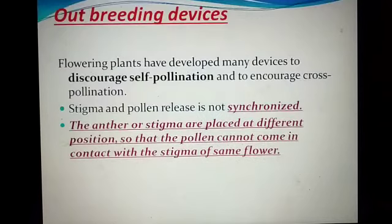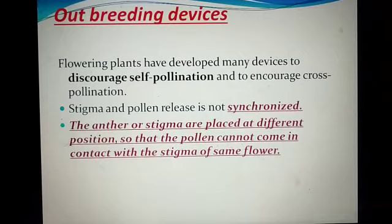So what happened? Flowering plants have developed many devices to discourage self-pollination and to encourage cross-pollination. These devices are called outbreeding devices. Today I am talking about four outbreeding devices which are developed by plants.